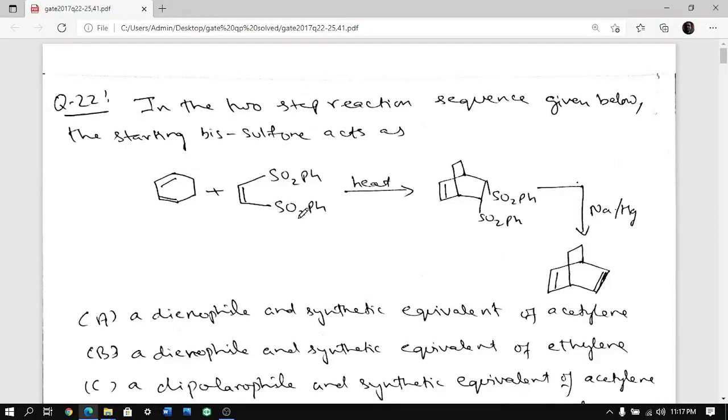Hello everyone, welcome back. Now we are moving to the second set of five questions from Gate 2017 question paper, and as you know I am doing only the organic. The next five organic questions happen to be question number 22, 23, 24, 25 and 41. So let us start with question number 22.